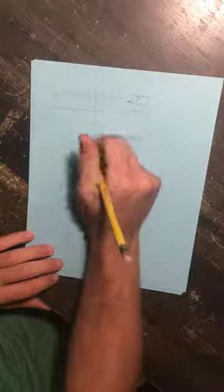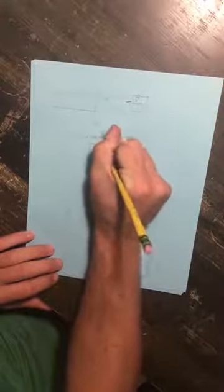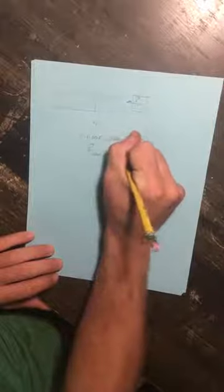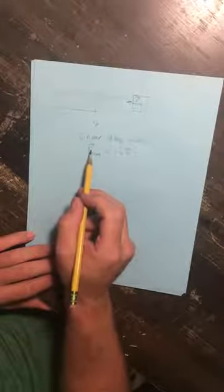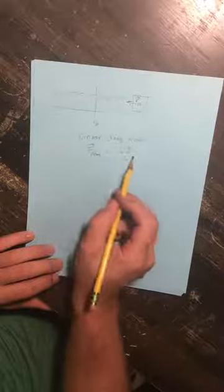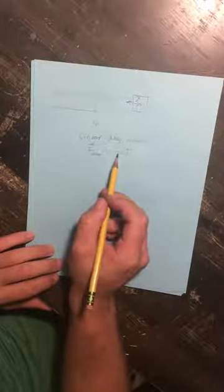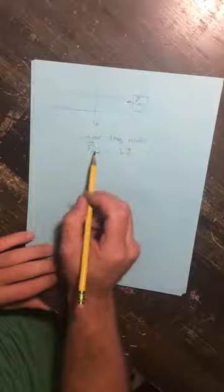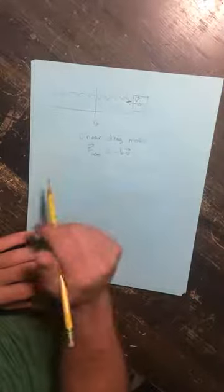And we're going to say that the drag force is equal to minus b times the velocity. Okay, so first of all, we have this feature where the drag force points in the opposite direction that the object is moving. This minus sign tells us that it's moving in the opposite direction of v. The drag force points in the opposite direction of v.